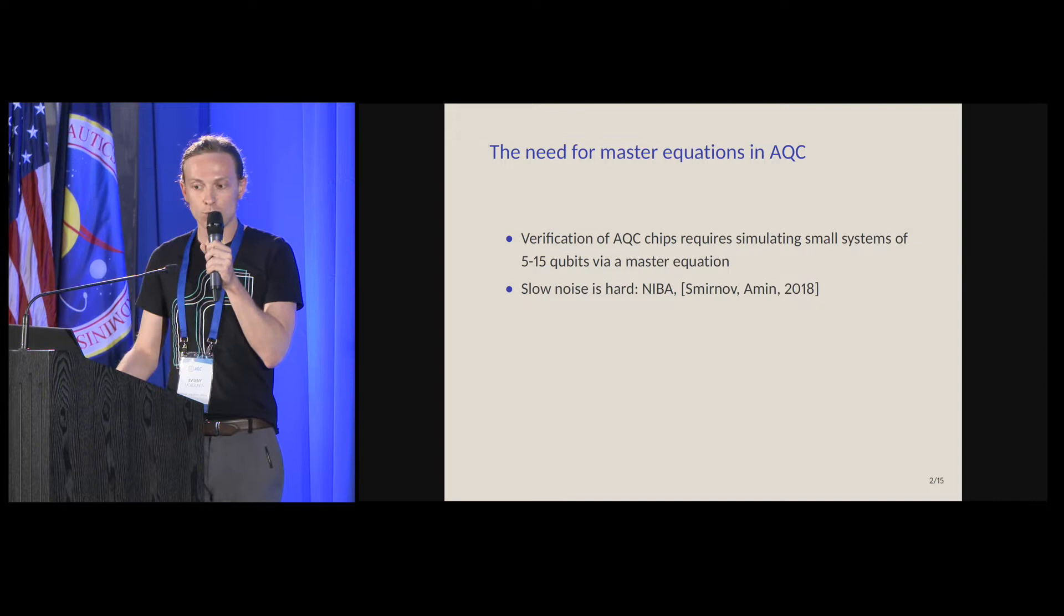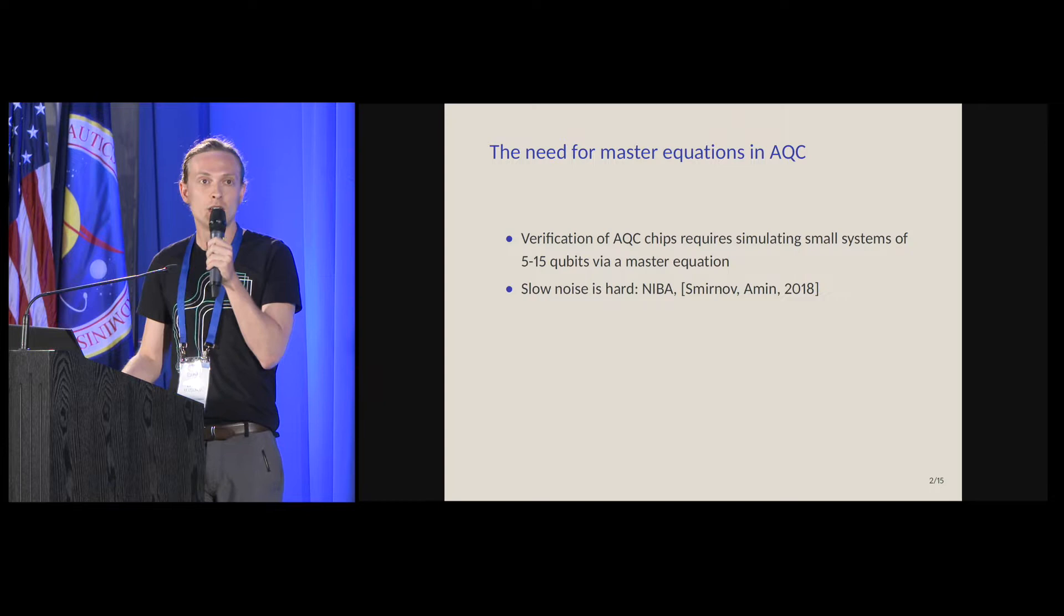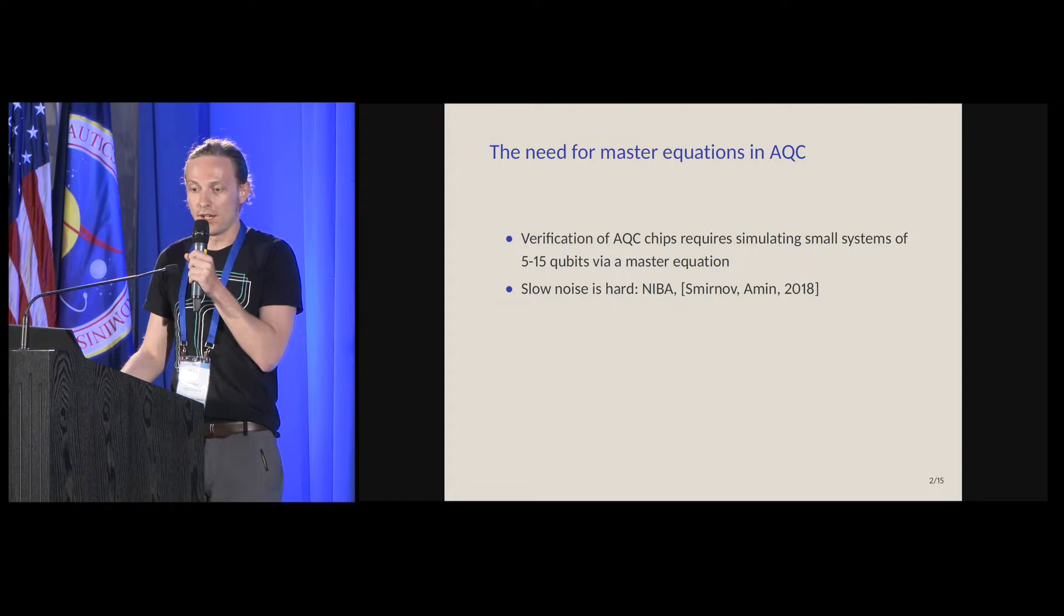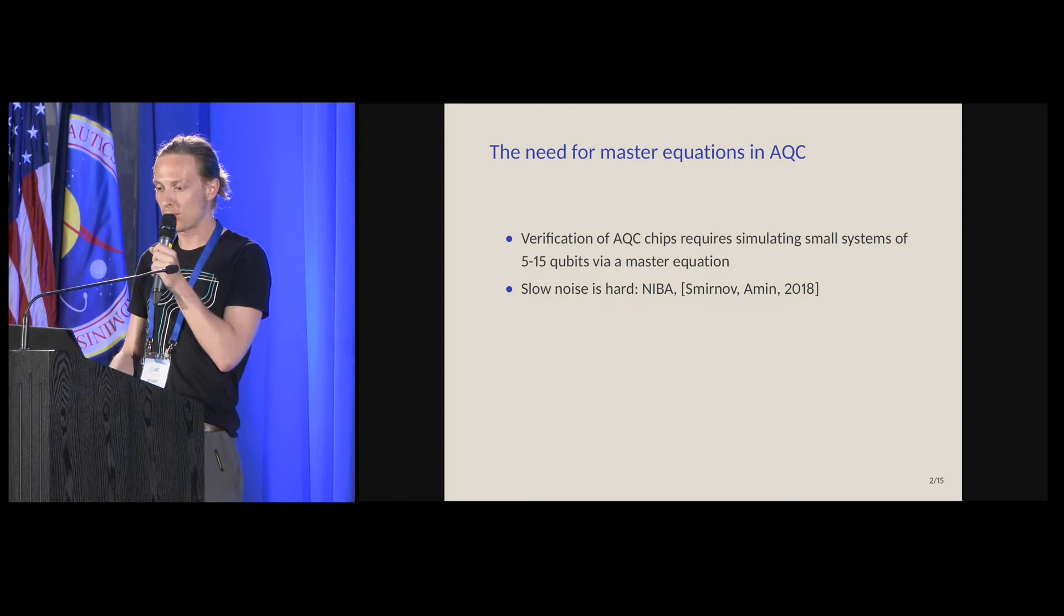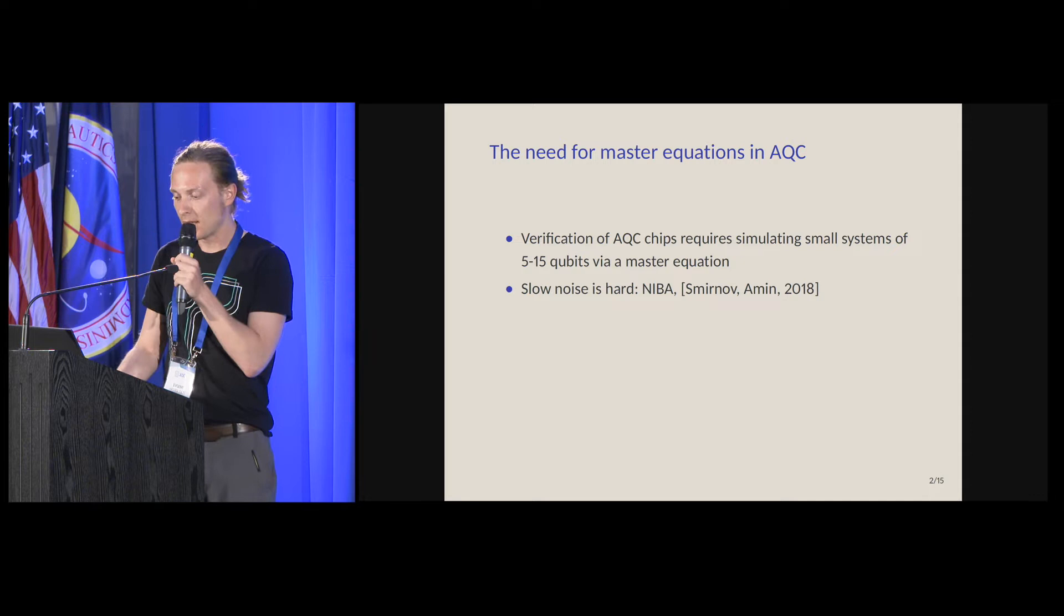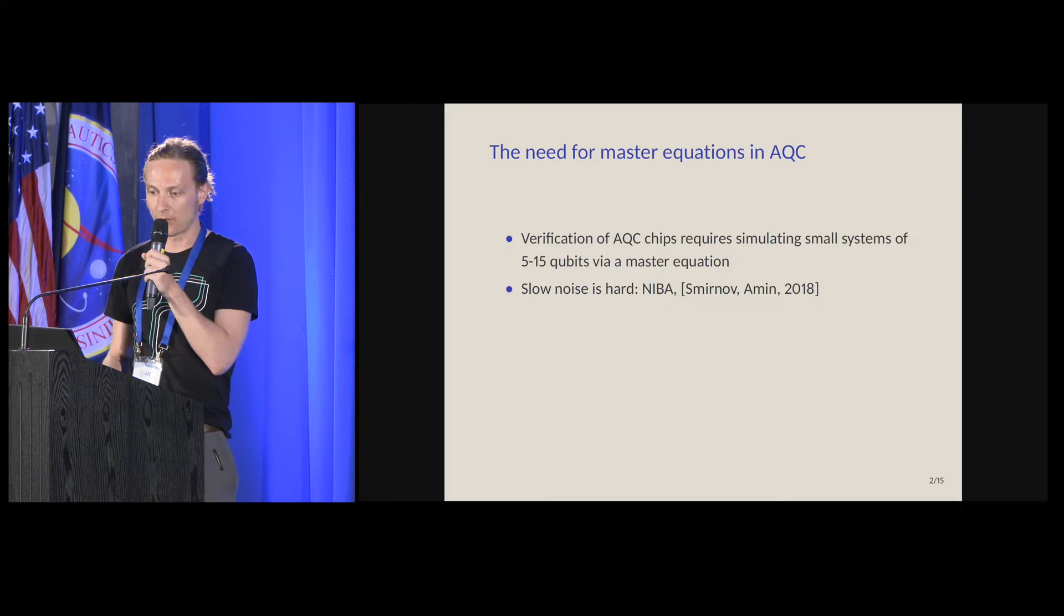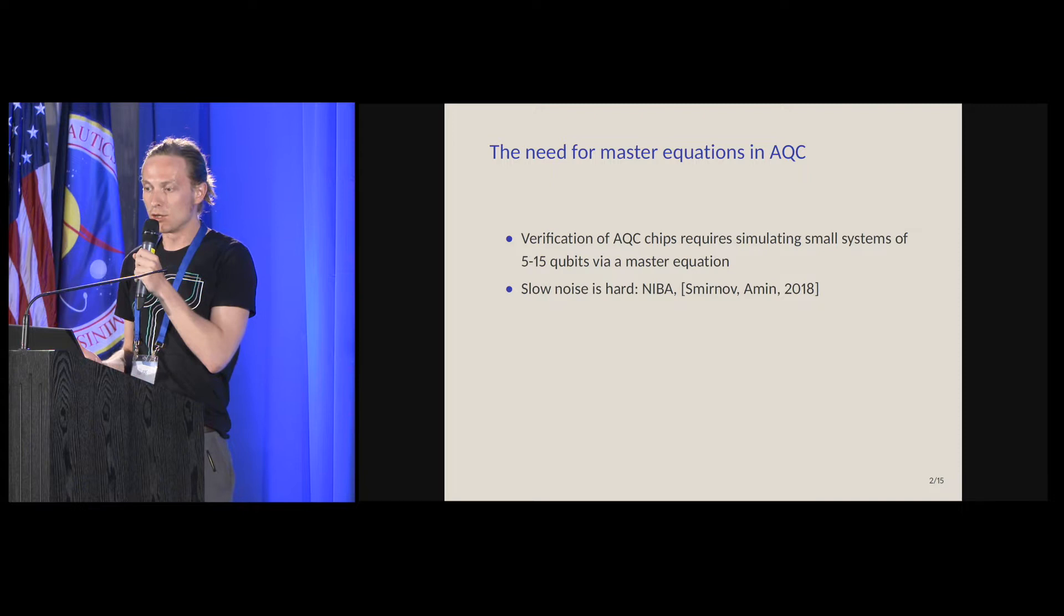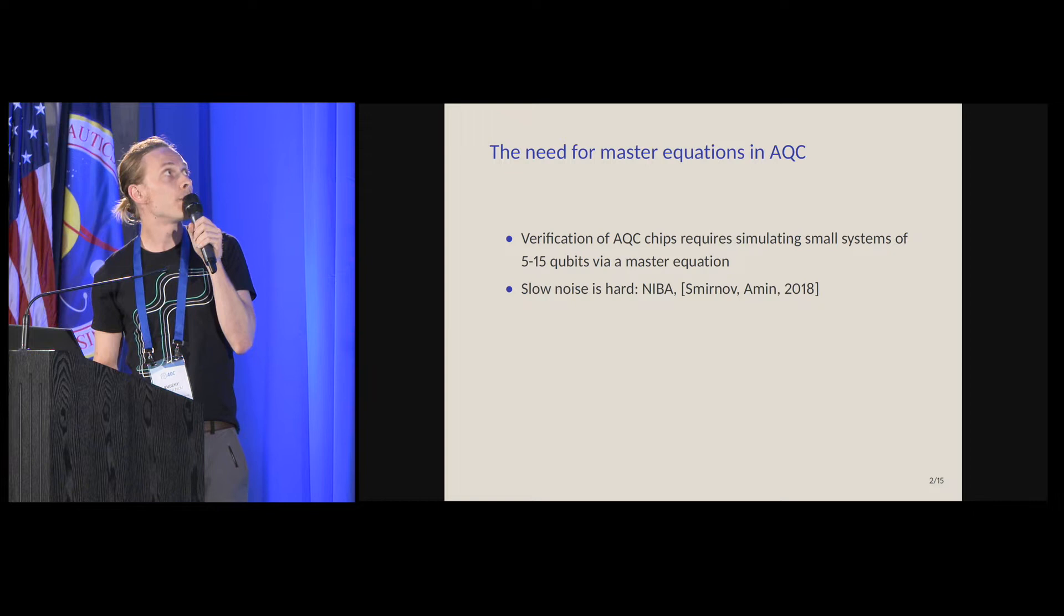I would like to point out that when tasked with simulation, most people immediately bang their heads on the slow noise problem. This problem is really hard, so the equations that we have right now is the non-interacting BLEEP approximation and also the recent work by Smirnov and Amin. Both of those equations are relatively hard to use in any kind of theoretical proofs. The latest 2018 equation is possibly usable for numerics, but I haven't really looked at it very carefully yet.